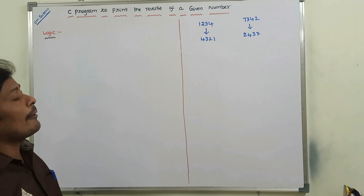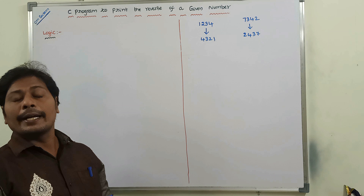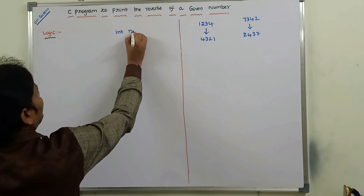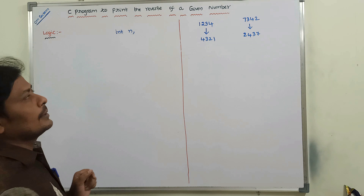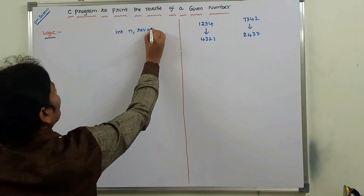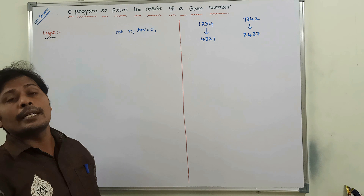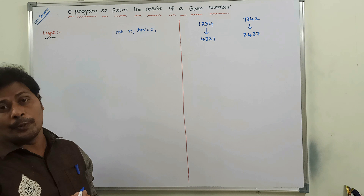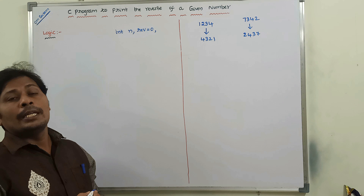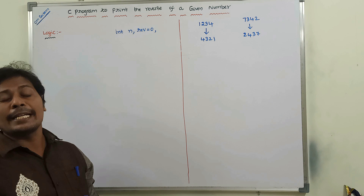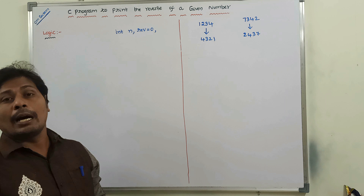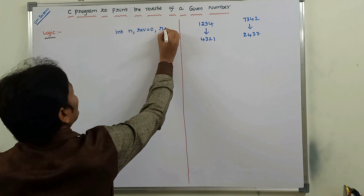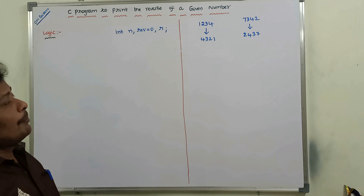What is the logic we have to follow to print the reverse of a given number? First I am declaring three variables: n, which contains the given number; rev, initialized to 0 — the result of reversing n will be stored in rev. We initialize rev to 0 to remove any garbage value. And another variable r. These are the three variables declared before using in the program.